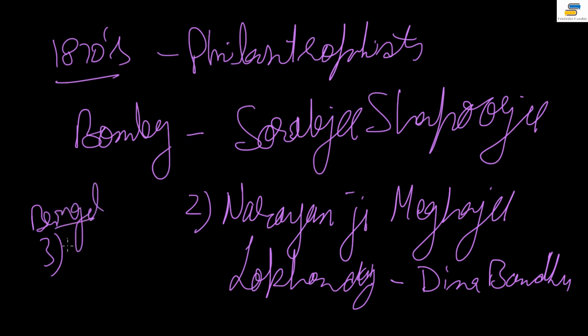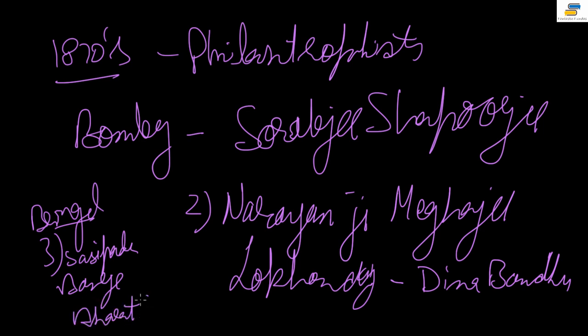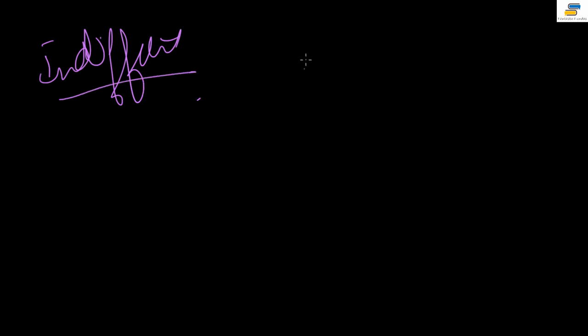Similarly, in Bengal the main person was Shashi Pada Banerji, who started a journal called Bharat Shram Jeevi to educate the workers about their rights. Now, the mainstream nationalist movement at this point was largely indifferent to the laborers in India. The main reason was that the struggle was still in its infancy and the leadership did not want to weaken it by creating divisions between labor and capitalists.